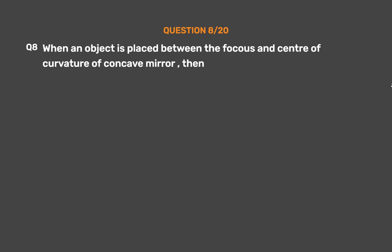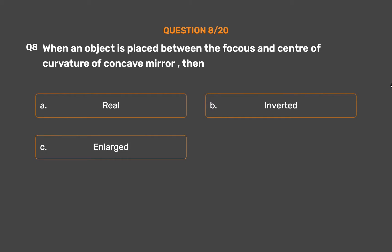Question number 8. When an object is placed between the focus and center of curvature of a concave mirror, then: option A, real; option B, inverted; option C, enlarged; option D, all of the above.